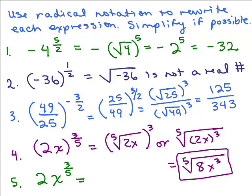And the last one in this set: 2 is not being raised to the 3 fifths power, so we just write the 2 again. Then x to the 3 fifths — the base is x — so we write the fifth root of x cubed, which looks more simplified than writing the fifth root of x in parentheses and then cubing it. Those are a few problems practicing radical notation and simplifying.